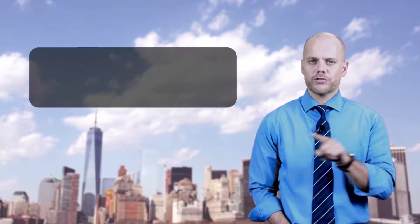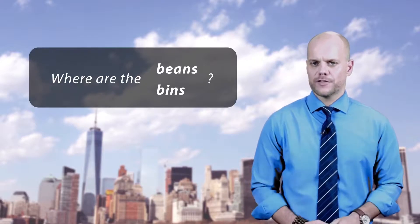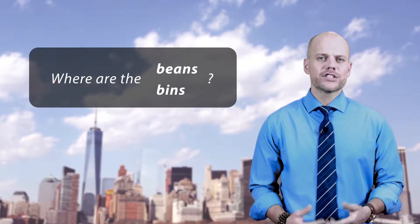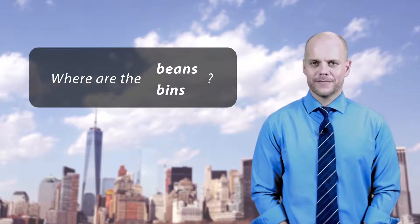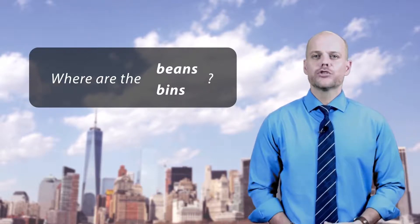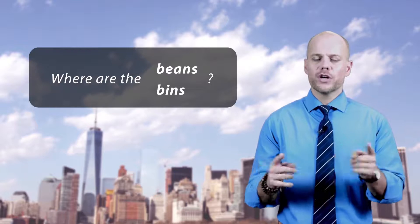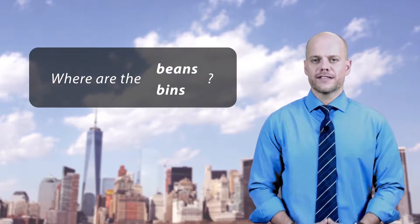The second activity will improve and test your ability to distinguish the I and E sounds in sentences. You will see a sentence on the screen where one word has two options. You will hear each sentence with one of the words being said. Your job is to choose which word was used in the sentence.